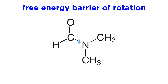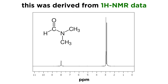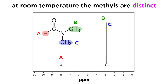Chemists have calculated that the free energy barrier of rotation around this C-N bond in DMF is around 20 kilocalories per mole, and this is rather typical of amides. This quite impressive figure was actually derived from NMR data. A typical 400 megahertz proton NMR spectrum of DMF at room temperature shows these two methyls as two distinct signals, indicating that they are fixed in place and thus not chemically equivalent.